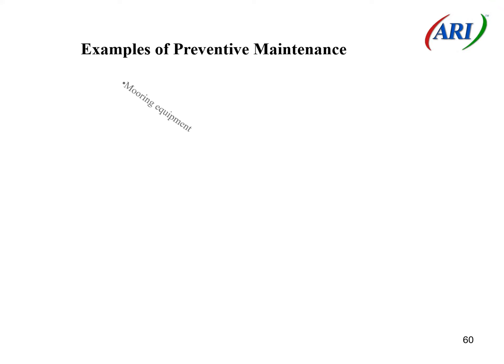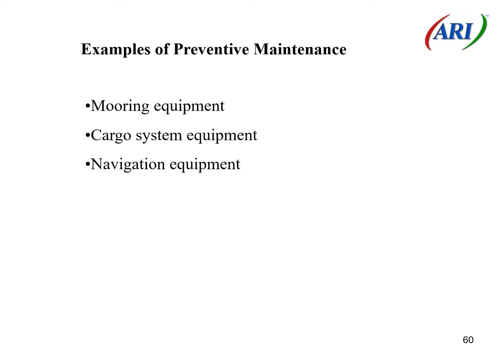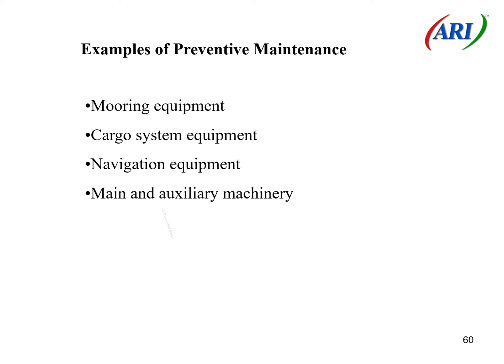Examples of preventive maintenance: Mooring equipment, Cargo system equipment, Navigation equipment, Main and auxiliary machinery, Hull-associated fittings.